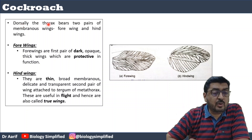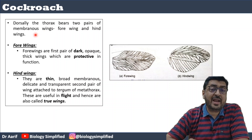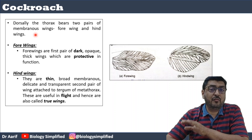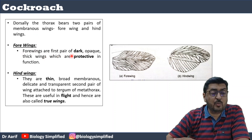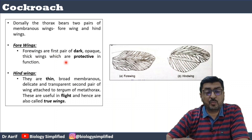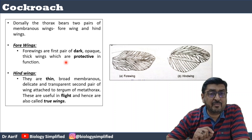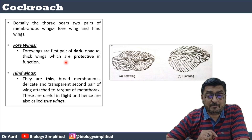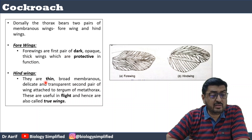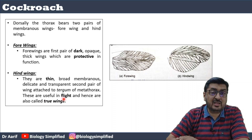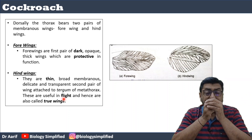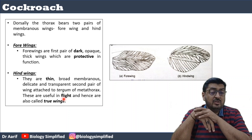Dorsally, the thorax bears two pairs of membranous wings — forewings and hind wings. The forewings are in the mesothorax and hind wings in the metathorax. The forewings are the first pair — dark, opaque, thick, and protective in function — called tegmina. The hind wings are thin, broad, membranous, transparent, and delicate, attached to the tergum of the metathorax. They are the true wings used for flight.